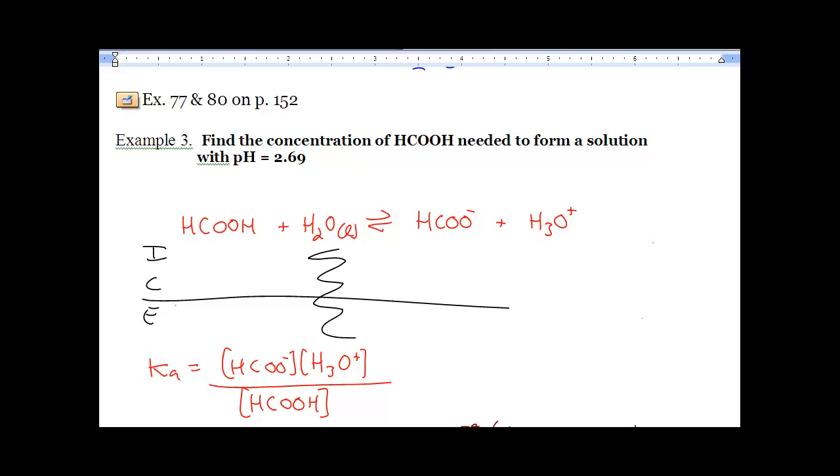We're going to find the concentration so we need to find C0 needed to form a solution with a pH of that. So there's your X. So the first thing I would do is I would go 10 to the negative pH which is 10 to the negative 2.69, which equals 2.04 times 10 to the negative 3 molar.